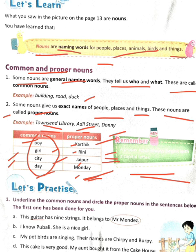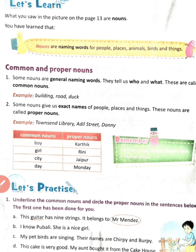The first question asks us to underline the common nouns and circle the proper nouns. An example is given: 'This guitar has nine strings. It belongs to Mr. Mendez.' In this sentence, the common noun is 'guitar' — any guitar could be meant — so it is underlined. Mr. Mendez is a person's name, so it is a proper noun and has been circled. In this way, we will solve the remaining questions.